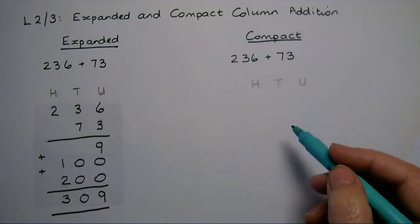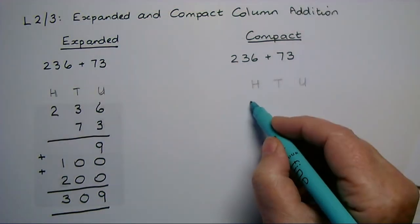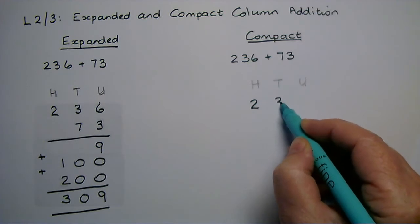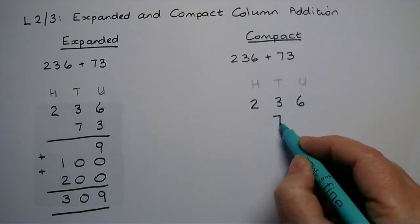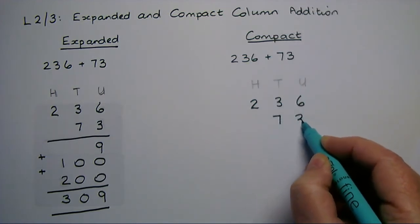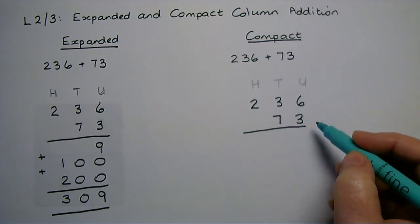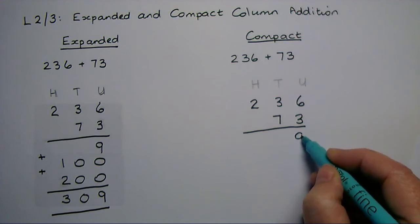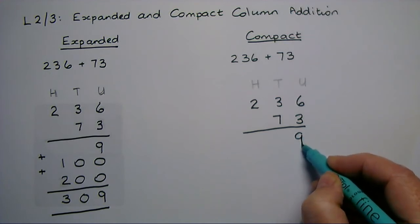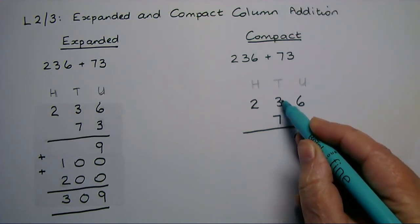If I do the same sum as a compact addition with carries, I start exactly the same — writing the two numbers underneath each other in place value order. But this time, when I've added the units I get 6 and 3, which is 9. When I add the tens, I've got 7 and 3, which is 10.